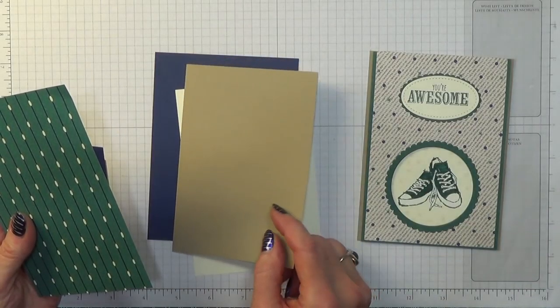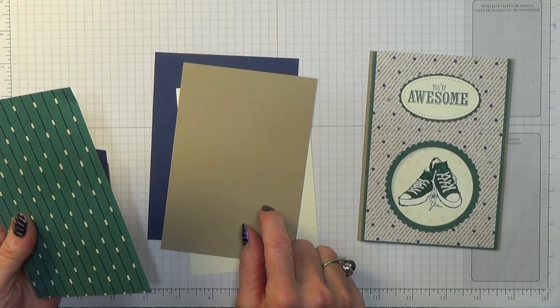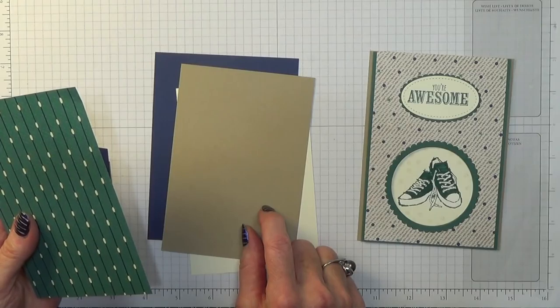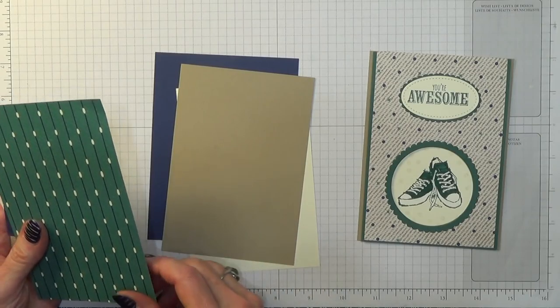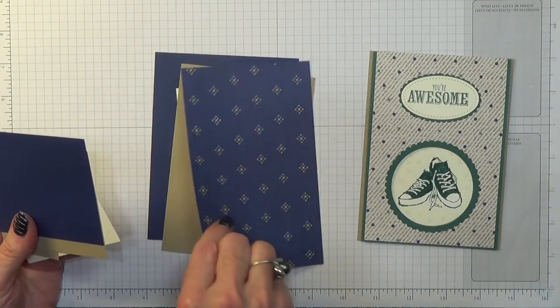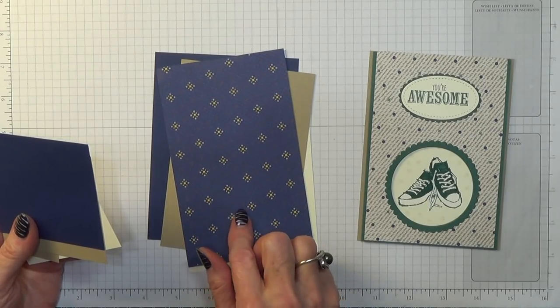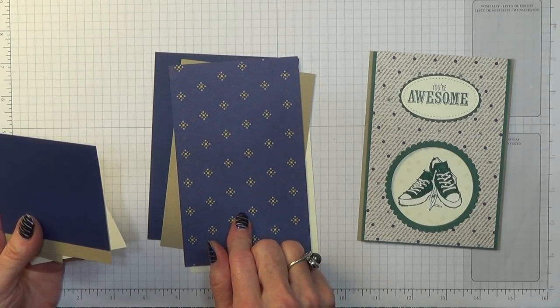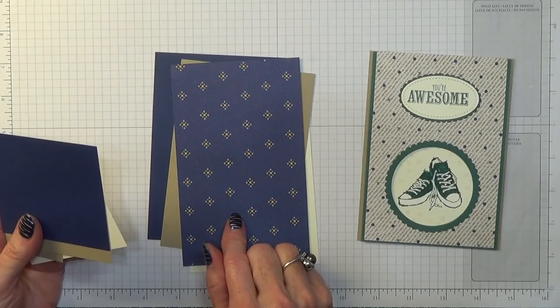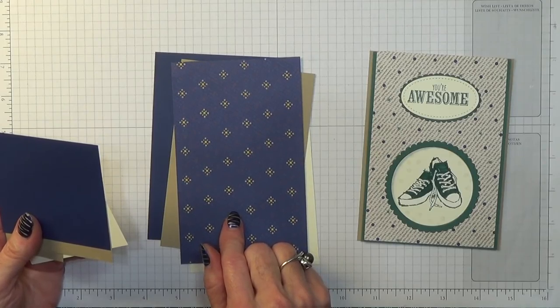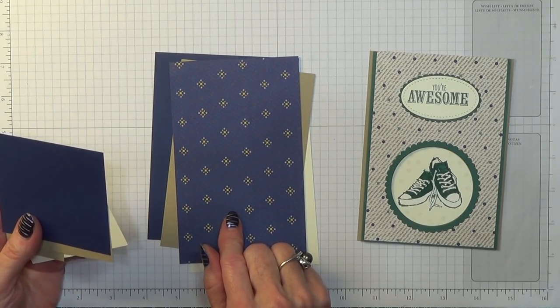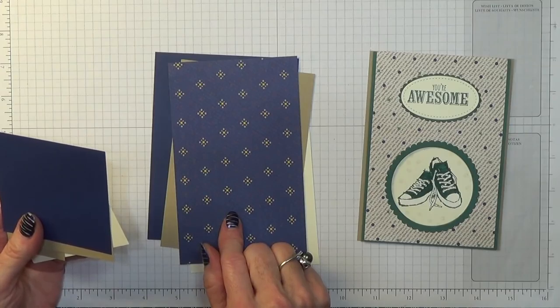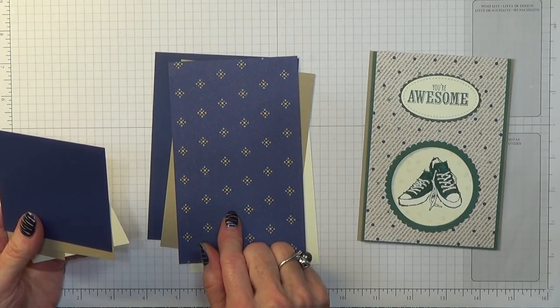A piece of Crumb Cake which measures 4 inches by 5 3/4 inches, which is 10.2 by 14.6 centimeters. A piece of True Gentleman Designer Series paper which measures 3 7/8 inches by 6 1/4 inches, which is 9.9 by 15.8 centimeters.